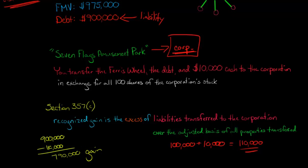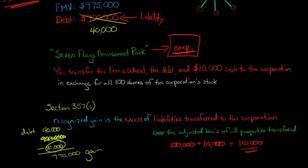Now let me give you another situation. Let's say instead of $900,000 of debt, the debt we are transferring was $40,000. Then what we'd be comparing is the excess of liabilities transferred to the corporation over the adjusted basis of all the property transferred. The adjusted basis of property transferred hasn't changed — it's still $110,000. So we have $40,000 of debt and $110,000 of adjusted basis of all properties transferred, so there would be no gain at all, because the debt of $40,000 does not exceed the $110,000 adjusted basis.